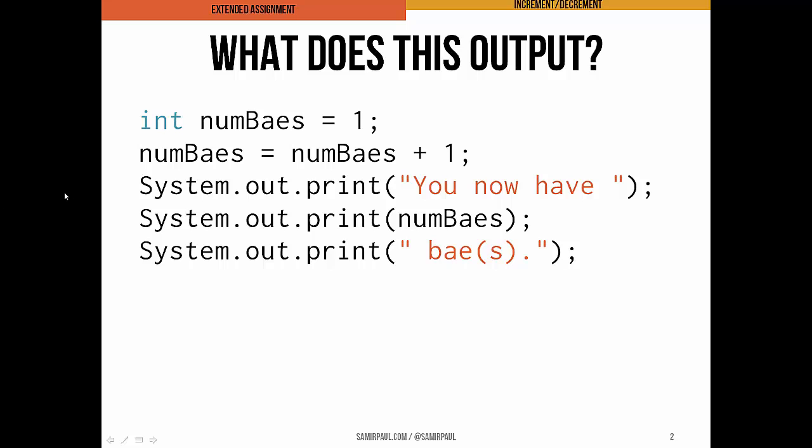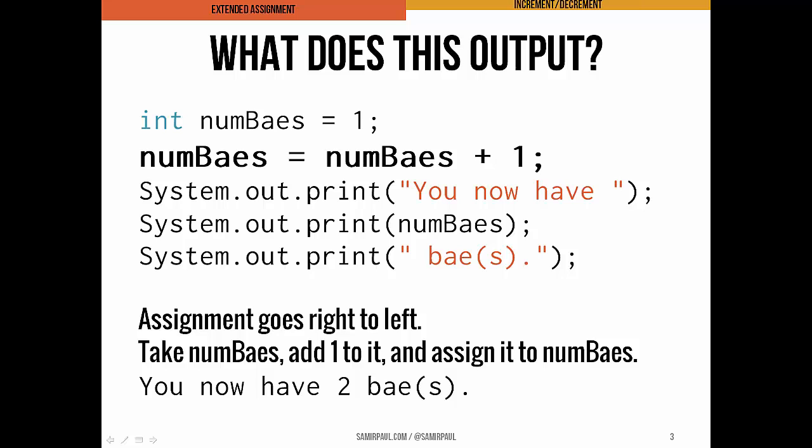So let's take a look at this little code snippet. We have an int numbase, currently it's at one. What we want to do in this next line of code is actually make numbase one bigger. Remember, assignment happens right to left. So that means the way this statement evaluates is it starts with whatever is currently in numbase, we add one to it, and then we go left and perform the assignment.